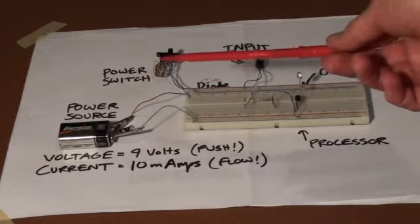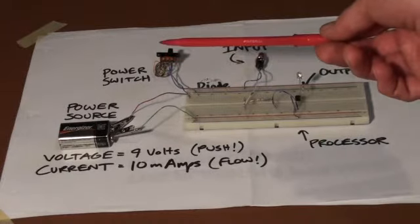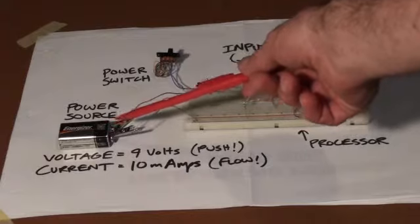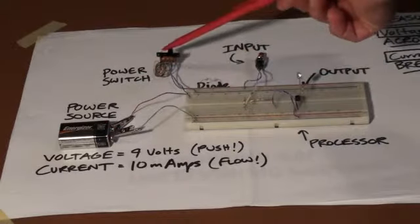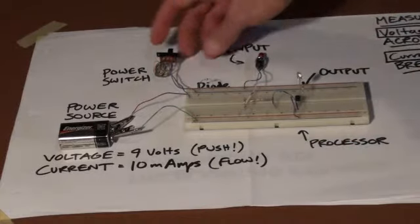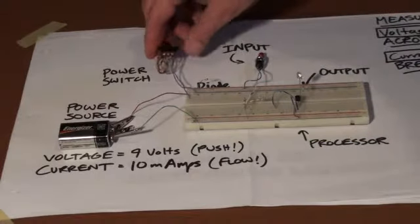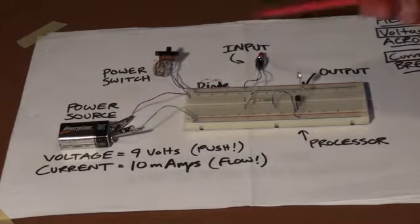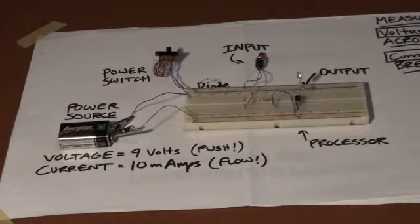In the power supply you have three pieces that will always be there. You have a power source, in this case a 9 volt battery. You have a power switch. The switch is a normal toggle switch back and forth, on and off. And you have a diode.